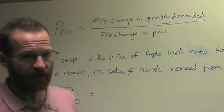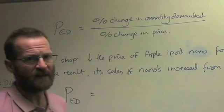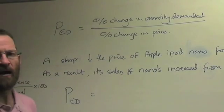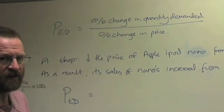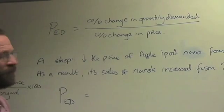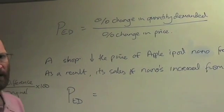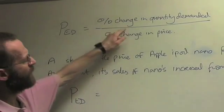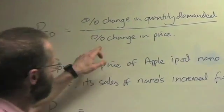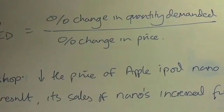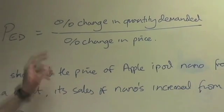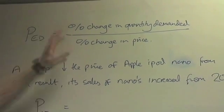The first elasticity you need to know something about is price elasticity of demand. Going through the four stages, the first stage is the definition. If you're asked to define price elasticity of demand, simply write the formula: percentage change in quantity demanded divided by percentage change in price. It's very important, you must put the percentage figures in.